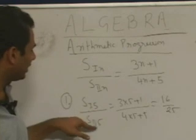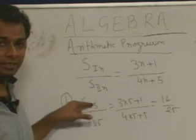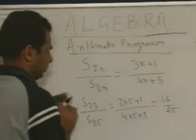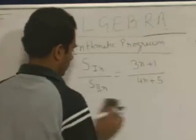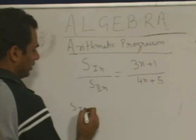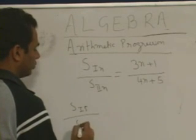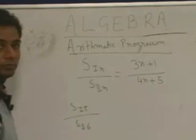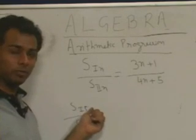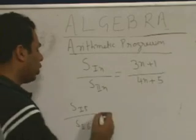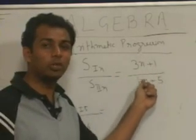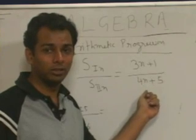Now, if you look here, the value of n is the same in both cases. But if I take the second case, which is S1_5 divided by S2_6, remember: when you need to find out the ratio of sum of first 5 terms to the sum of first 6 terms, we cannot directly put n = 5 in the numerator and n = 7 in the denominator. Never.